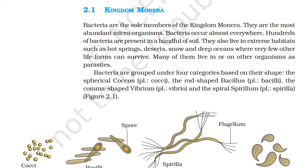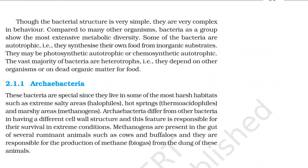Bacteria are grouped into four categories based on their shape: the spherical coccus, the rod-shaped bacillus, the comma-shaped vibrium, and the spiral spirillum. Though the bacterial structure is very simple, they are very complex in behavior. Compared to many other organisms, bacteria as a group show the most extensive metabolic diversity.